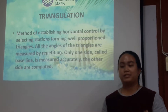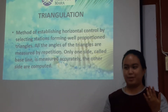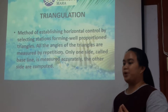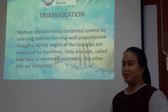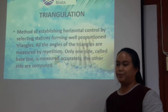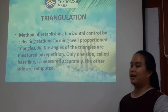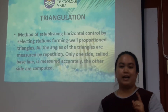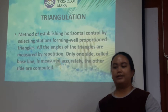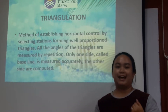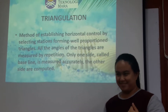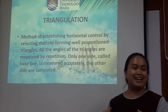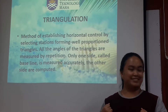The next method used in surveying is triangulation. Triangulation is a method of establishing horizontal control by a network of station-proportional triangles. All the angles of the triangle are measured by repetition. Only one side, called the baseline, is measured accurately, and the other sides are computed.